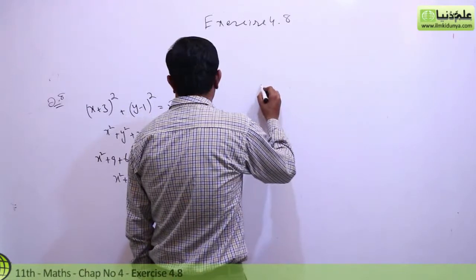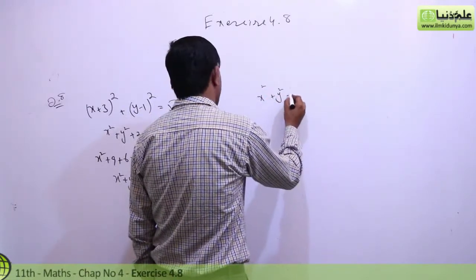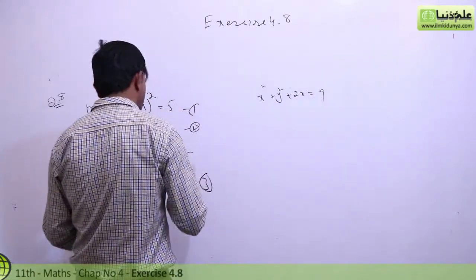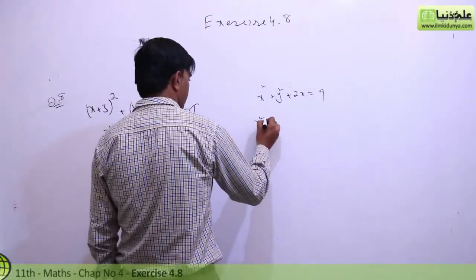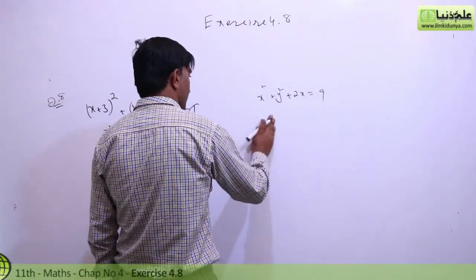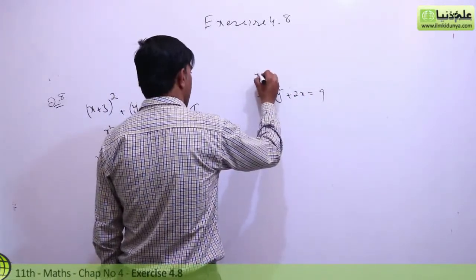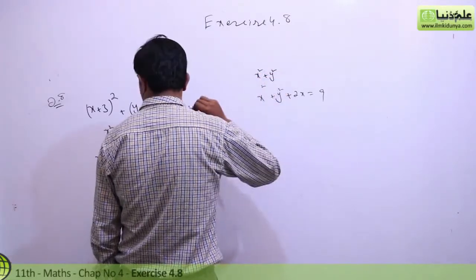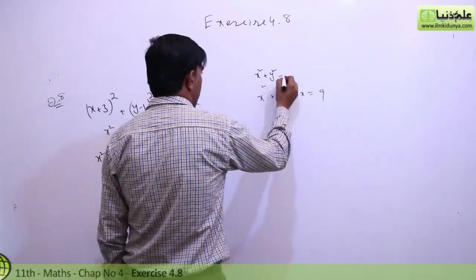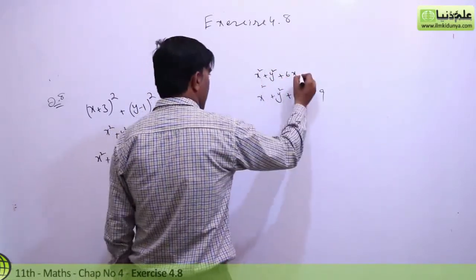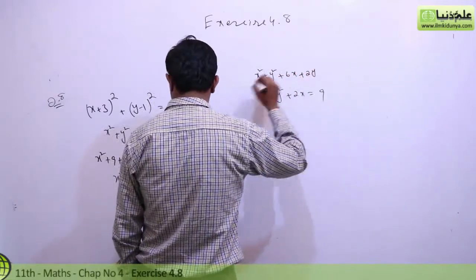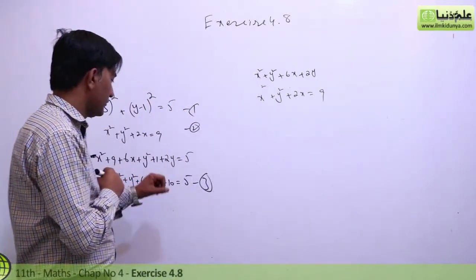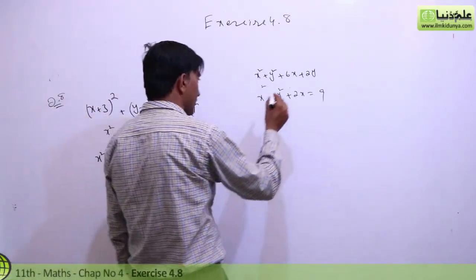Now if I subtract equation 2 — x square plus y square plus 2x equal to 9 — from the simplified equation 1: x square plus y square plus 6x plus 2y. Then x square plus y square equal to 5 minus 10, which is minus 5.